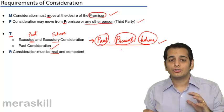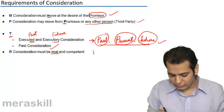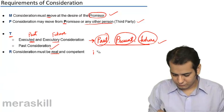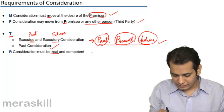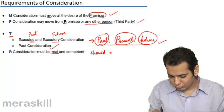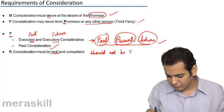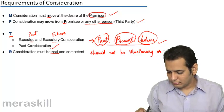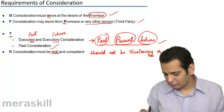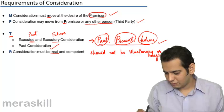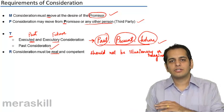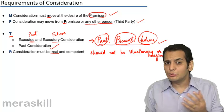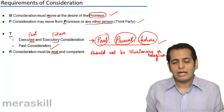The consideration should not be illusionary or imaginary or something which does not exist. Now can you think of something which is not real, which is illusionary, which is imaginary? I'll give you an example.